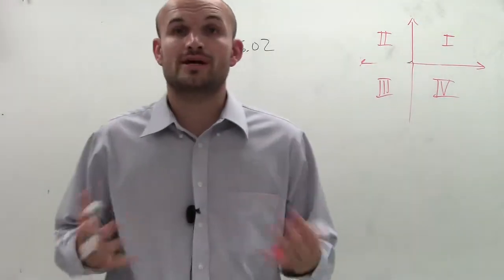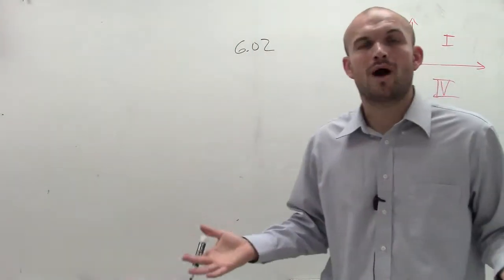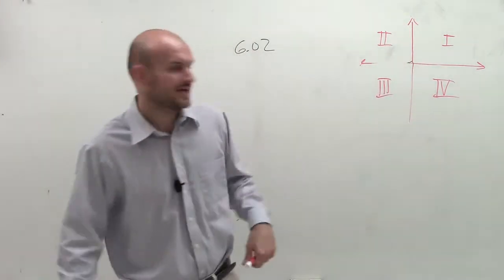What I want to do is determine where the radian measure of 6.02, which quadrant that terminal side is going to be. So we know it's positive, so we're going to go in the counterclockwise direction.